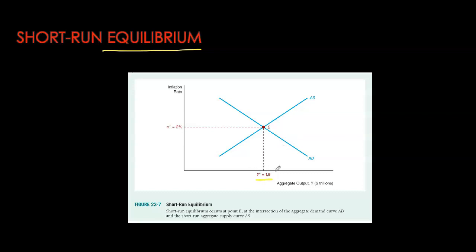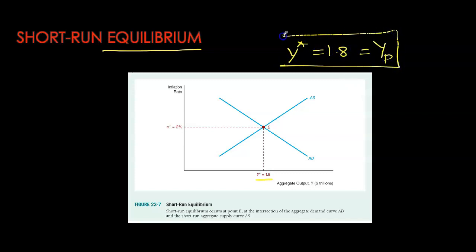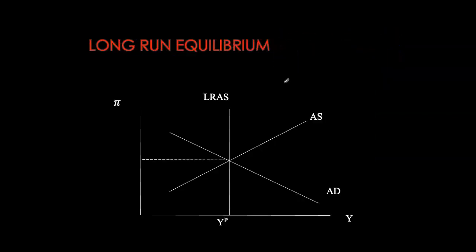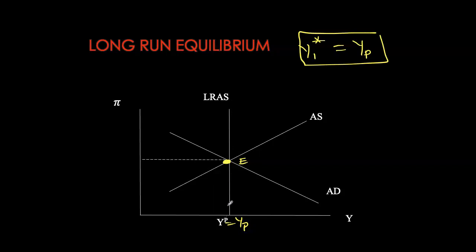In contrast, our long-run equilibrium would be if your short-run intersection of AD and AS happens to be at the same point as your potential GDP. So if our short-run equilibrium Y-star is 1.8 and our potential is also 1.8, that means we are at our long-run equilibrium. The long-run AS will always be vertical at your potential level. We can now look at situations where your short-run equilibrium GDP is not the same as our potential and see how the economy self-corrects.